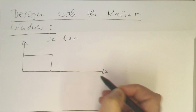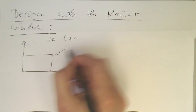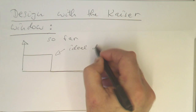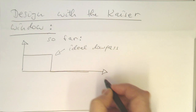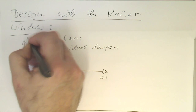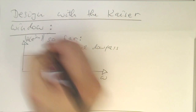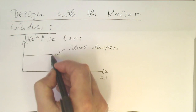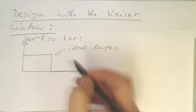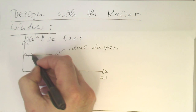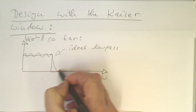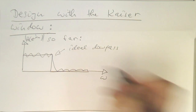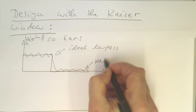We have defined our brick-wall response here — that's our ideal low-pass filter. The frequency axis is omega, and this is h of e to the j omega. But we know that the real response looks differently. The real response always has some form of ripple, then a certain transition width, and then ripples in the stop band. This is our real result.